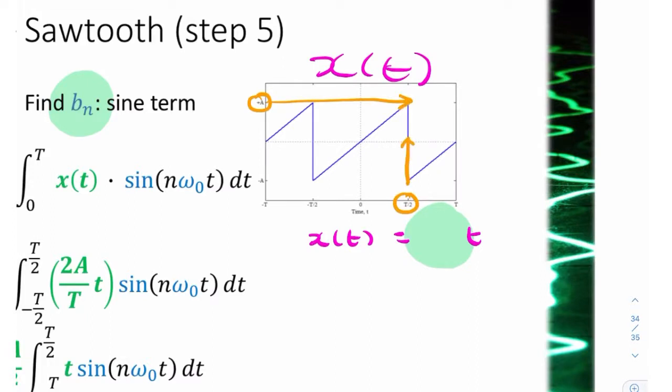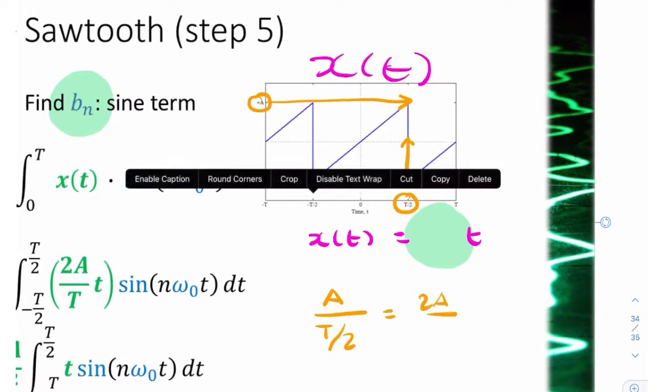So the gradient is A divided by T over 2, which is 2A over T.